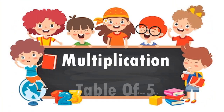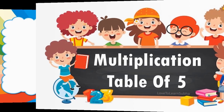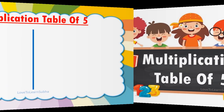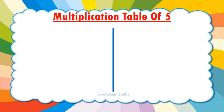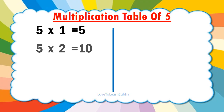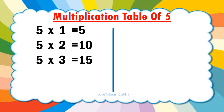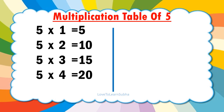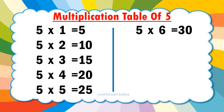Multiplication table of 5. 5 1s are 5, 5 2s are 10, 5 3s are 15, 5 4s are 20, 5 5s are 25, 5 6s are 30.